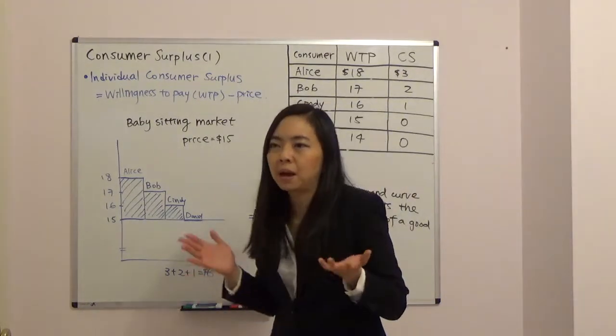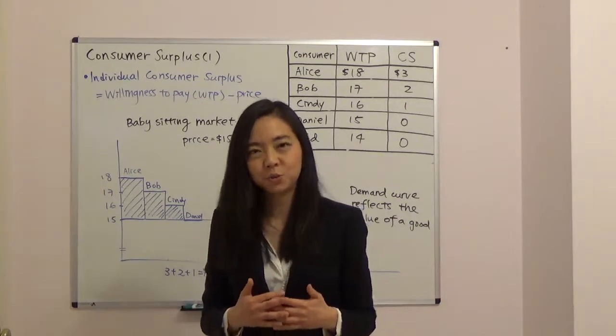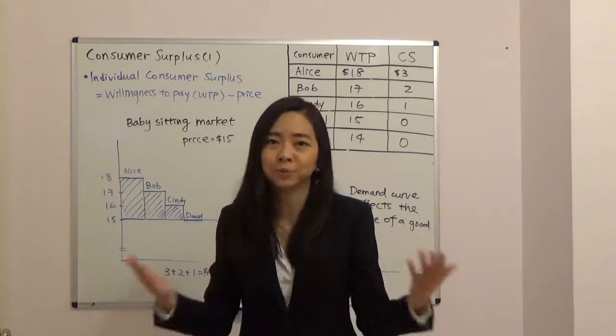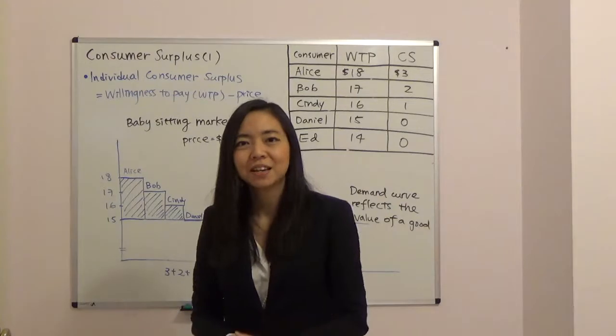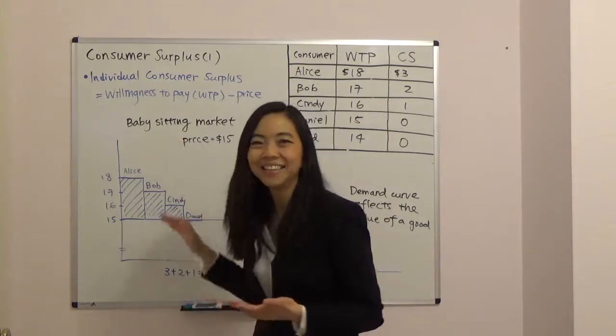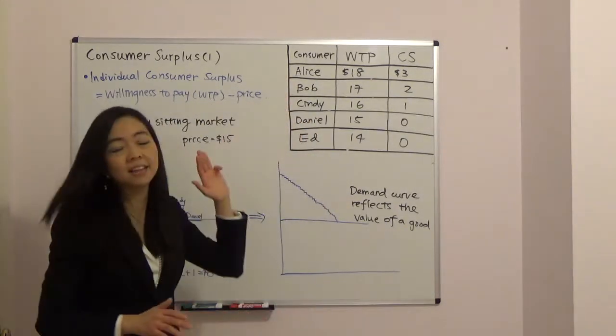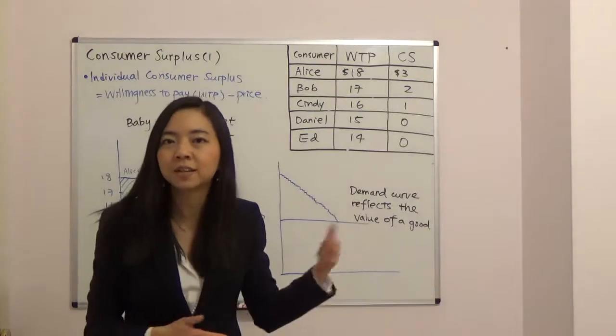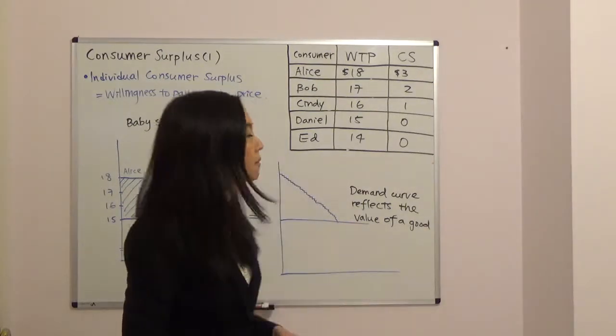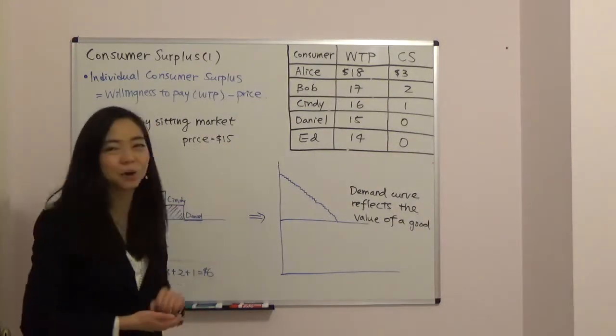Now we don't just care about the consumer surplus for one consumer, we care about the consumer surplus for the entire market, all consumers, summing it up. So I'm going to use another example. Suppose we're in a babysitting market, so we have a mini market, we have several consumers, and they're trying to hire a babysitter so they can go out with their spouse maybe.